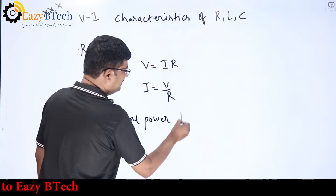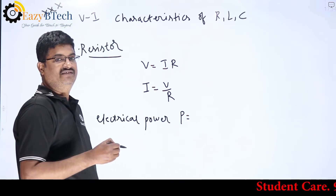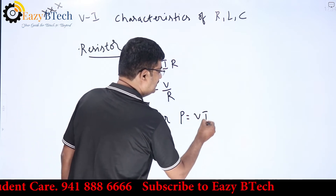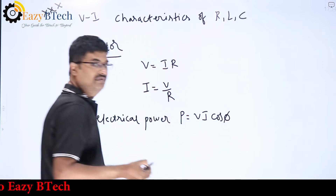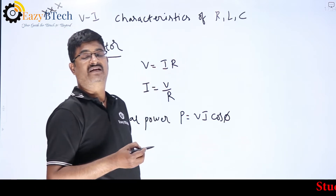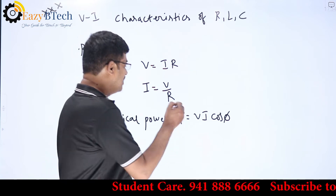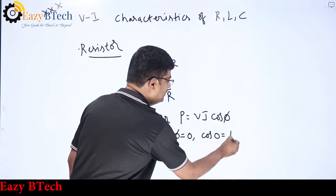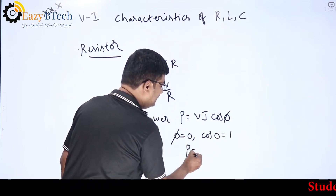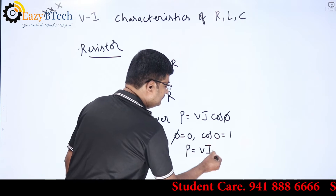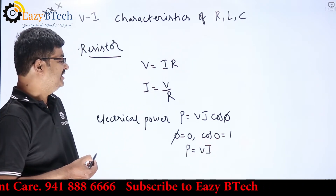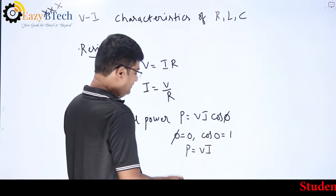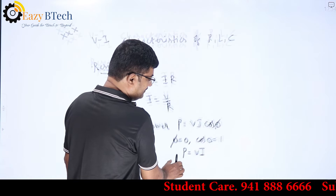When coming to electrical power, p = vi·cos(φ), where cos(φ) is the angle between voltage and current. Generally, we take φ = 0, so cos(0) = 1, and directly p = v·i. So the power equation for a resistor is p = v·i, the product of voltage and current.